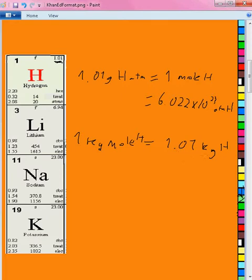If you have 1 kilogram mole of hydrogen, you have 1.01 kilograms of hydrogen. However, 1.01 kilograms of hydrogen isn't actually 6.022 times 10 to the 23rd atoms of hydrogen. It's that times 1,000, because 6.022 times 10 to the 23rd is actually 1 gram mole, by the definition of the gram mole.